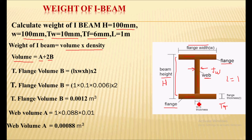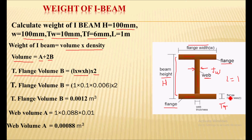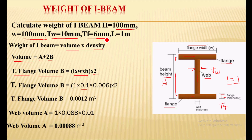First we calculate the volume for the flanges. Total volume for the flanges equals length × width × height, multiplied by 2 since there are two flanges. So total flange volume B = 1 m × 0.1 m (flange width W) × 0.006 m (flange thickness TF) × 2, giving 0.0012 m³.